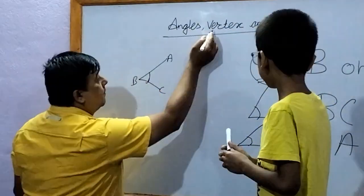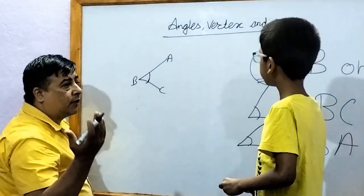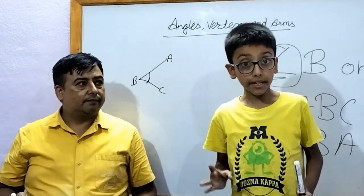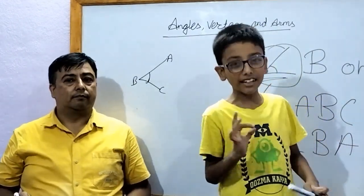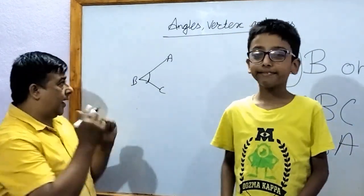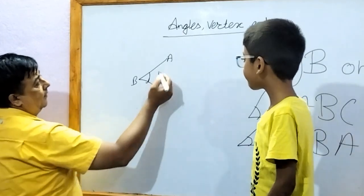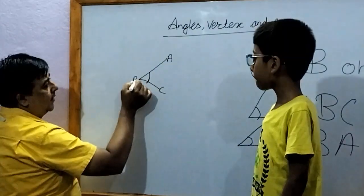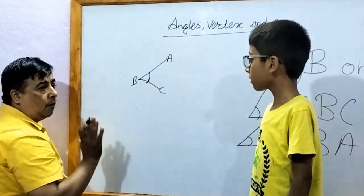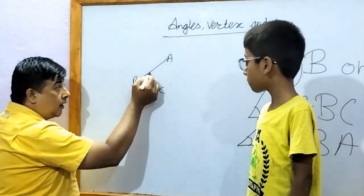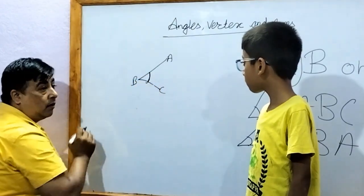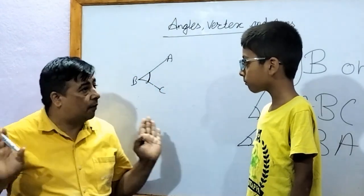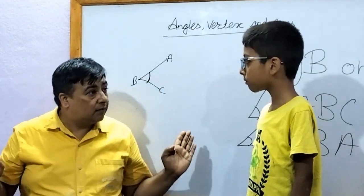Then can you tell me about the vertex? What is the vertex? The vertex is the corner of an angle. When two lines meet at a point, this point is called the vertex — or the corner of any angle is called the vertex.